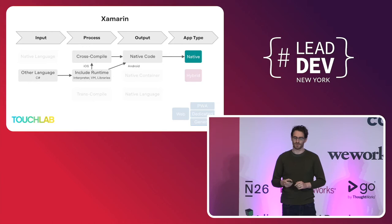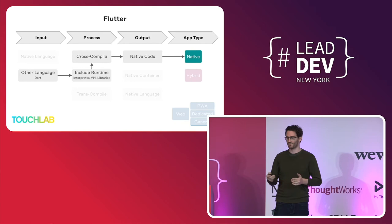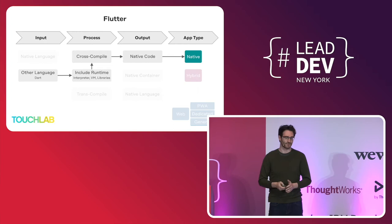That makes Xamarin slightly more native on iOS than on Android. With Flutter, you're still writing in a foreign language — this time Dart. But for production builds, it will compile all the necessary runtime libraries for widget rendering and business logic directly to native code ahead of time on both platforms. So Flutter is a bit more native than Xamarin.